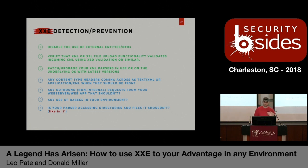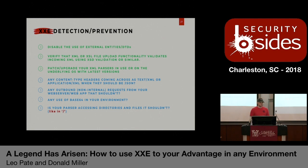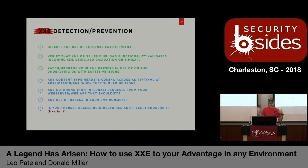Everybody's heard the stat that adversaries are typically in your network 200-plus days before being detected. How do I get that number down from 200-plus to 90, to 30, to 30 minutes? How can I get such a well-oiled machine that my network and my applications and everything is down to that detection level?